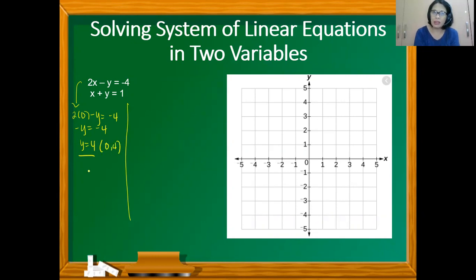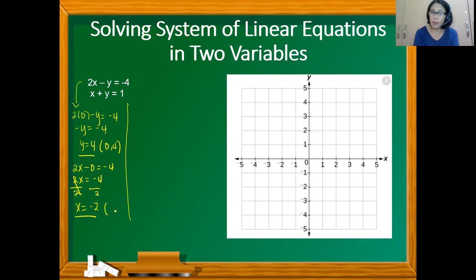Now if we let y equal zero, we have 2x minus 0 equals negative 4, so 2x equals negative 4. Dividing both sides by 2, we get x equals negative 2. So x equals negative 2 is the x-intercept, giving us another point from the first equation at (−2, 0).